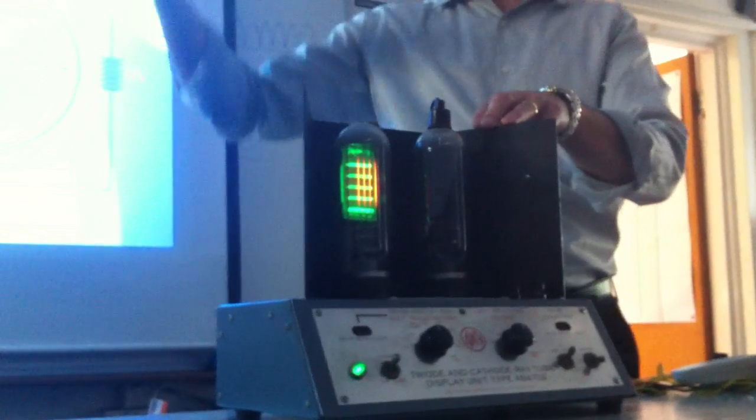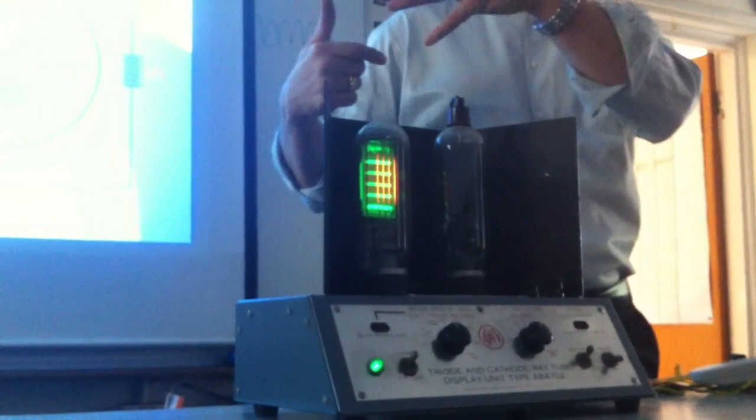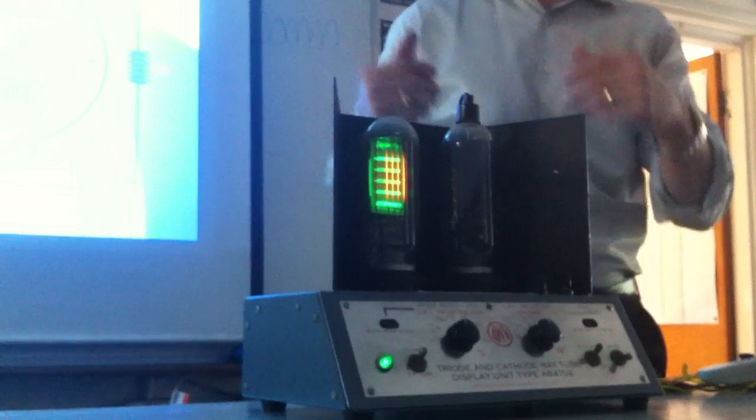It's a phosphorescent coating on the anode, sorry. So the electrons are going from the cathode at the front to the anode at the back. And when they hit the phosphorescent screen they give off light.